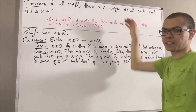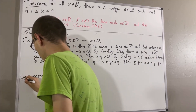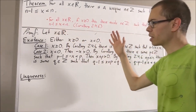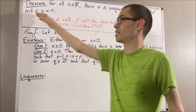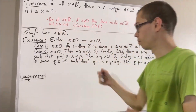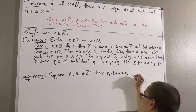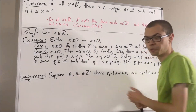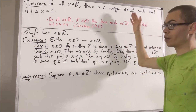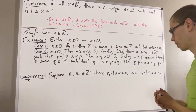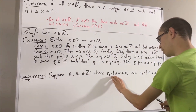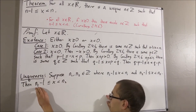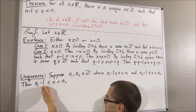Now we want to prove uniqueness — we want to show that there is only one integer that satisfies this inequality. To do that, suppose we have two integers which satisfy this inequality; I'll call them n1 and n2. Our whole goal is to show that n1 is equal to n2, because that will tell us there can only be one integer satisfying this inequality. We can see that n1 minus 1 is less than or equal to x, which is less than n2, and this tells us that n1 minus 1 must be strictly less than n2.